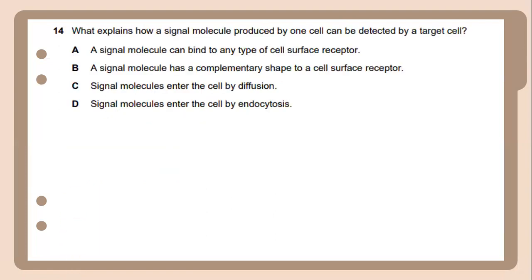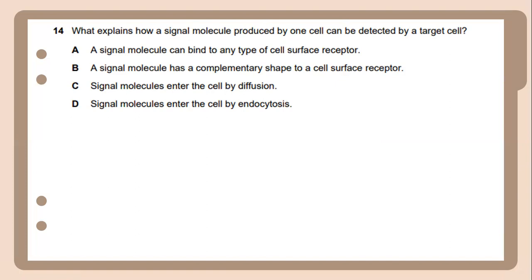Number 14. Which explains how a signal molecule produced by one cell can be detected by a target cell? The correct answer is B, which is a signal molecule that has a complementary shape to a cell surface receptor. Number 15. A signal molecule can be detected by the target cell because it fits like a key into a specific receptor on the cell surface.